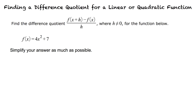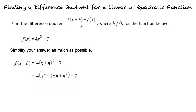How do we begin this problem? First, we'll find f of x plus h. We can begin by substituting in x plus h for x in the original equation. Then we can square x plus h and distribute 4 into the equation for our final simplified equation.